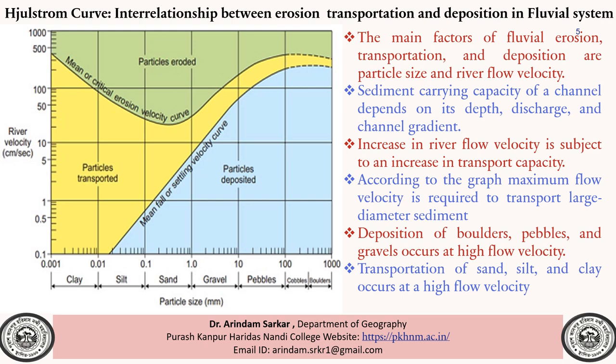The Hulström curve represents the interrelationship between erosion, transportation, and deposition in the fluvial system. The main factors of fluvial erosion, transportation, and deposition are particle size and river flow velocity. Particle size is shown on the horizontal axis and river velocity on the vertical axis. The sediment carrying capacity of a channel depends on depth, discharge, and channel gradient. An increase in river flow velocity leads to an increase in transport capacity.